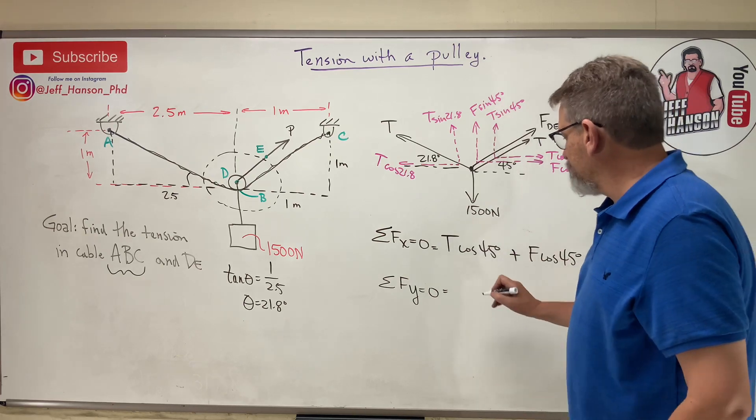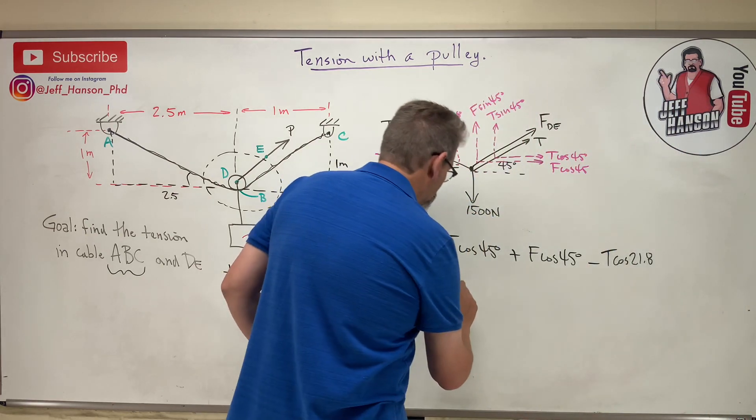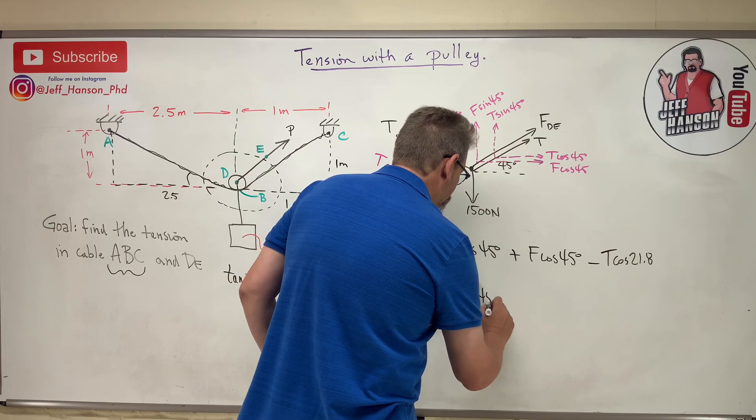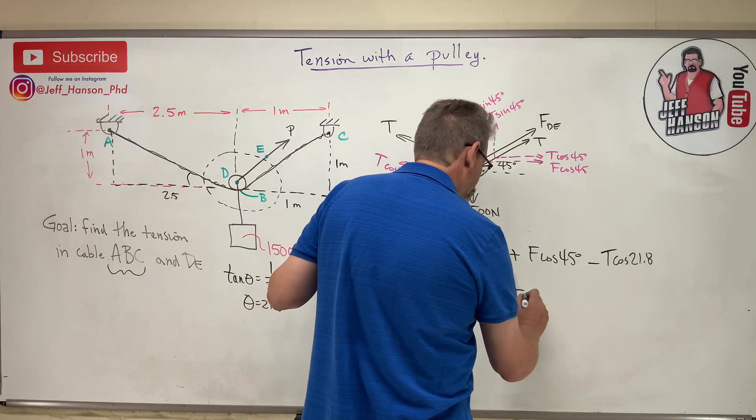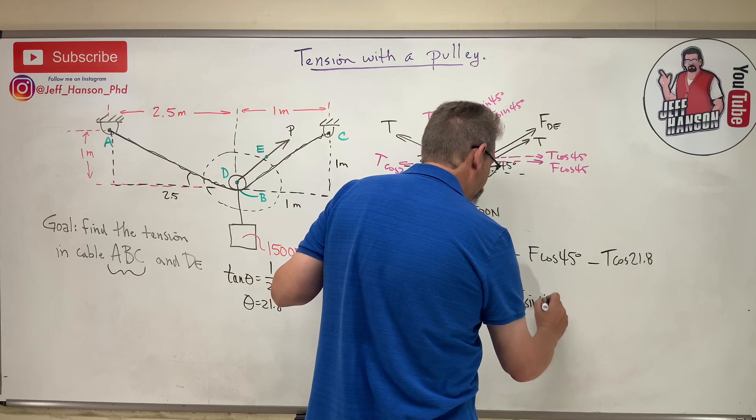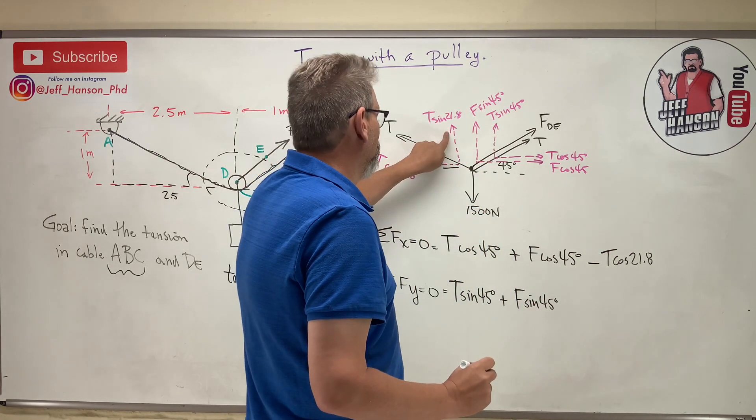T sin 45 plus F sin 45 plus T sin 21.8, and then minus the 1500.